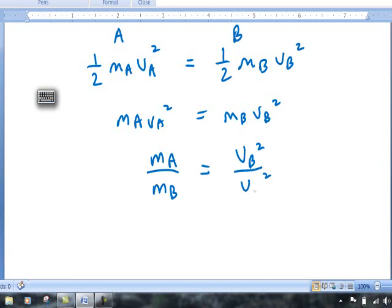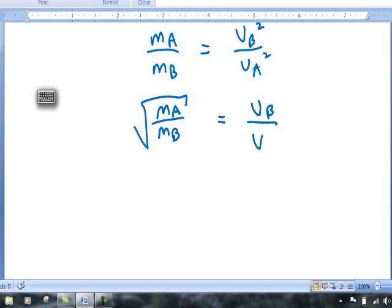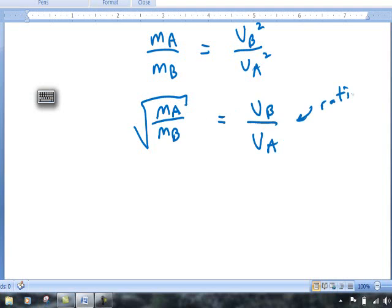Now let's get rid of the square sign by taking the square root of both sides. So we're going to have the square root of the mass of gas A divided by the mass of gas B is equal to the velocity of gas B divided by the velocity of gas A. This essentially gives us a ratio of the velocity of gas B to the velocity of gas A when the gases are at the same temperature.